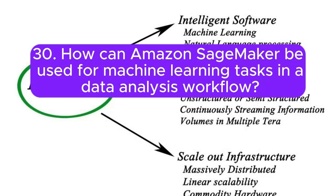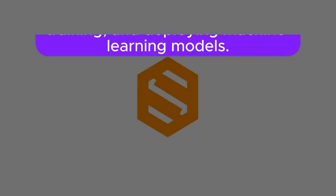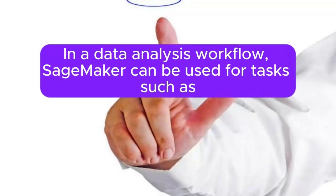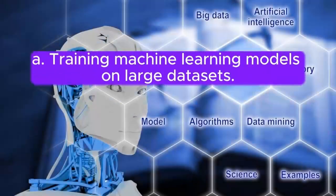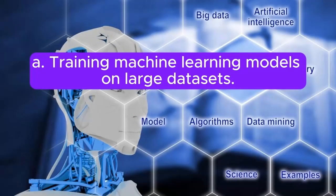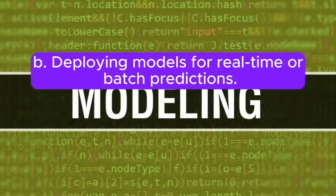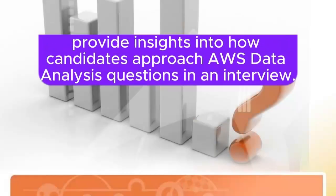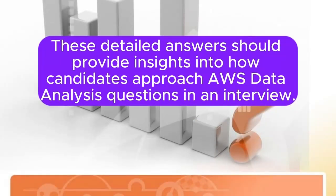30. How can Amazon SageMaker be used for machine learning tasks in a data analysis workflow? Answer: Amazon SageMaker is a fully managed service for building, training, and deploying machine learning models. In a data analysis workflow, SageMaker can be used for tasks such as: A. Training machine learning models on large datasets. B. Deploying models for real-time or batch predictions. C. Automating machine learning workflows with SageMaker Autopilot.